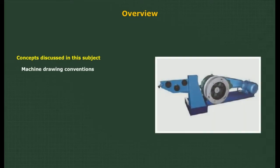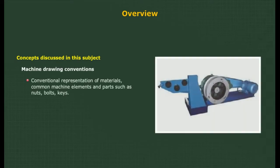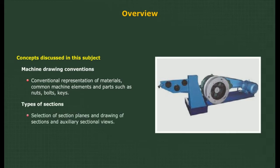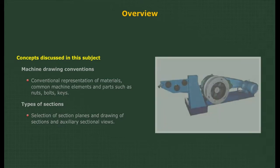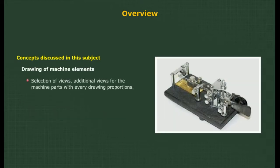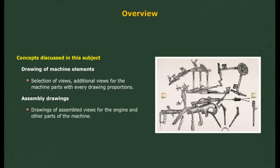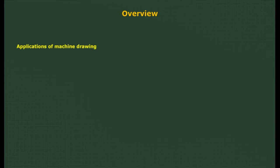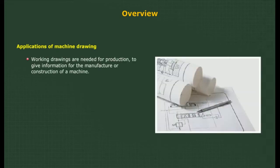Concepts discussed in the subject of machine drawing include: conventional representation of materials, common machine elements and parts such as nuts, bolts, keys, types of sections, selection of section planes, drawing of sections and auxiliary sectional views, drawing of machine elements, selection of views, additional views for machine parts, assembly drawings, and drawings of assembled views for the engine and other machine parts.